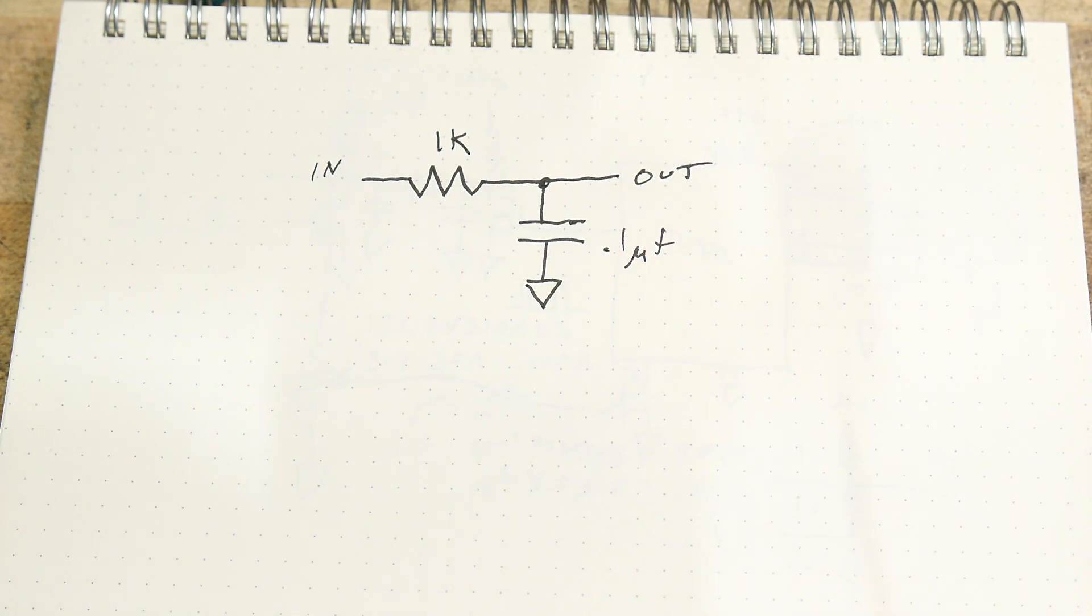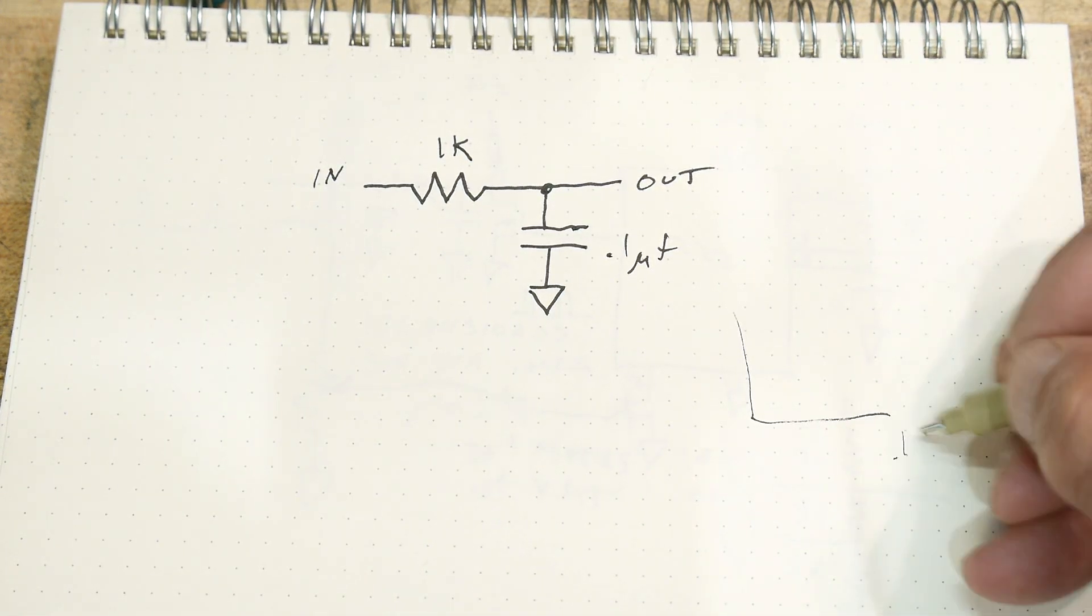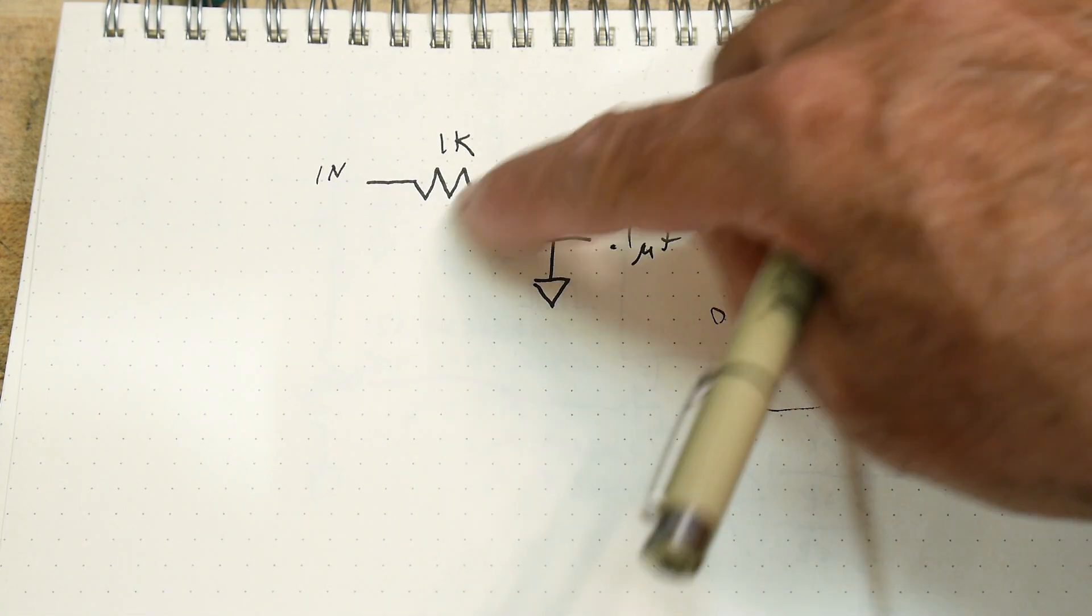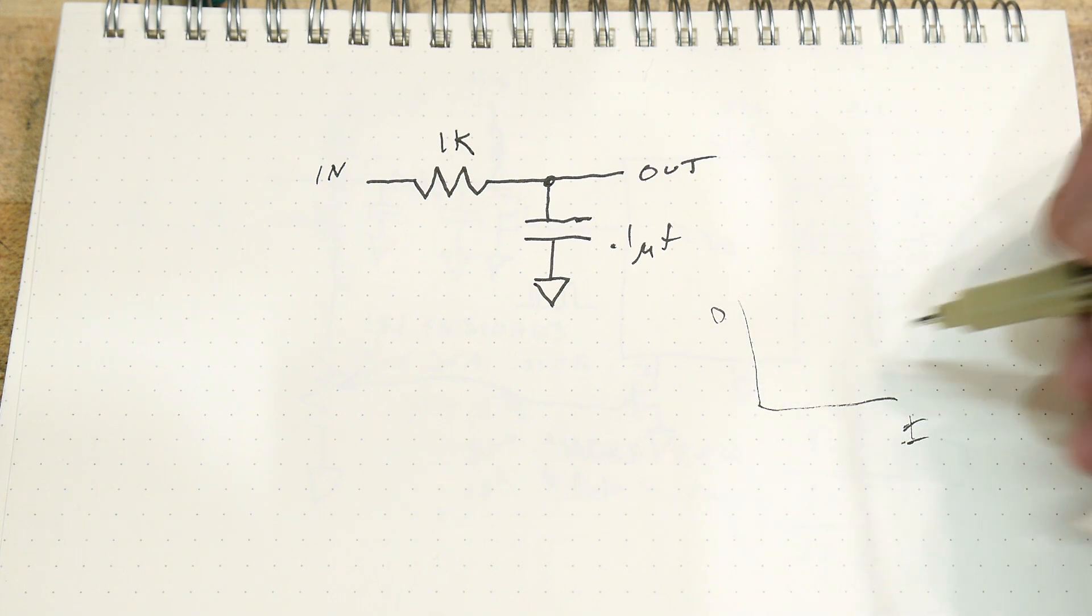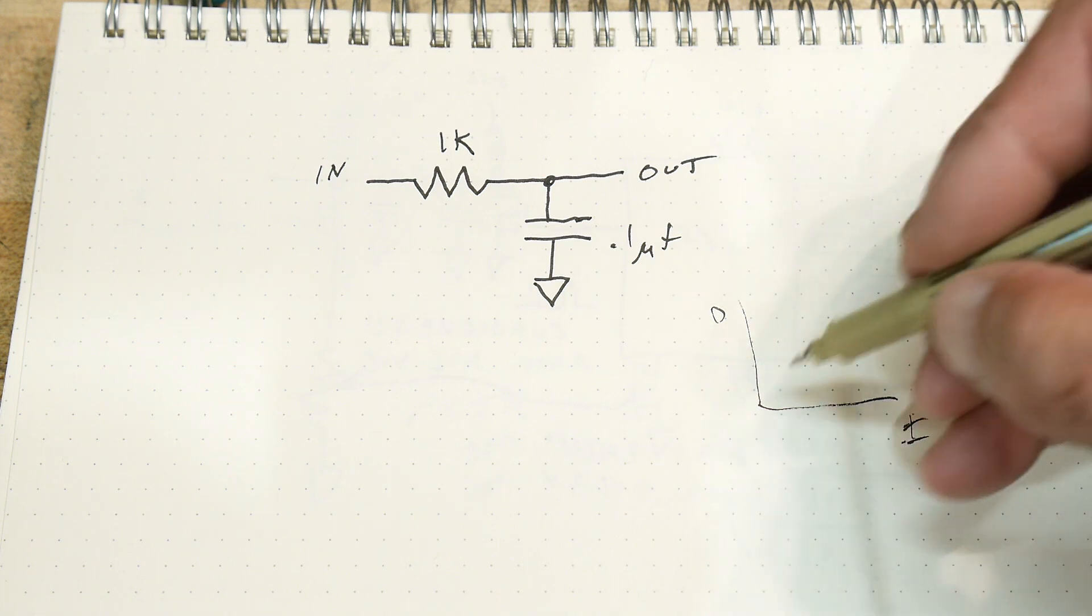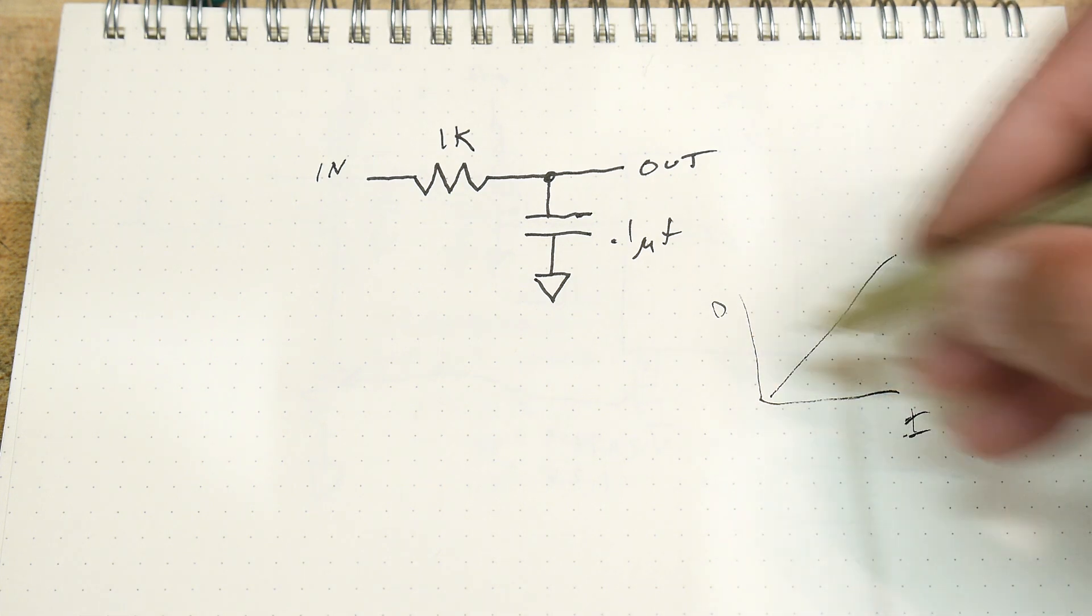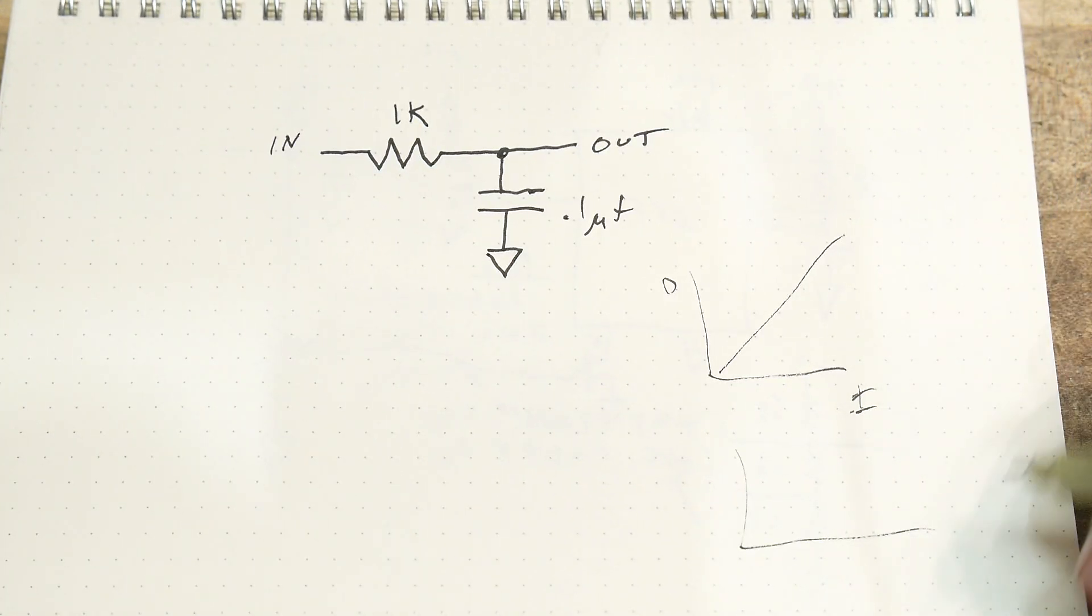And so if you wanted to graph this, you could graph it as an input to output type graph. And so what would that look like? And if the input and the output were always the same, it would look something like this, but we want to do it a bit differently. We're going to graph it over frequency.